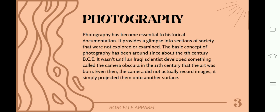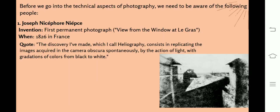It wasn't until an Iraqi scientist developed something called the Camera Obscura in the 11th century that the art was born. Even then, the camera did not actually record images — it simply projected them onto another surface. The first permanent photograph was the view from the window at Le Gras, taken in 1826 in France. Joseph Niépce's famous quote: 'The discovery I've made, which I call heliography, consists in replicating the images acquired in the camera obscura spontaneously by the action of light with the gradation of colors from black to white.'